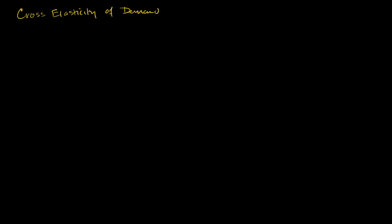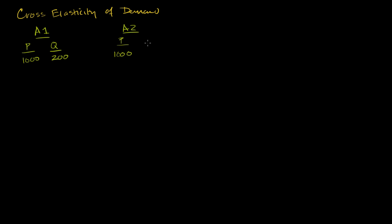To see an example of this, think about two competing airlines on the exact same route — maybe between New York and London — going at the exact same time. Airline one has a price of $1,000 for a round trip and a quantity demanded of 200 tickets in a given week. Airline two also has a price of $1,000 and a quantity demanded of 200 tickets as well.